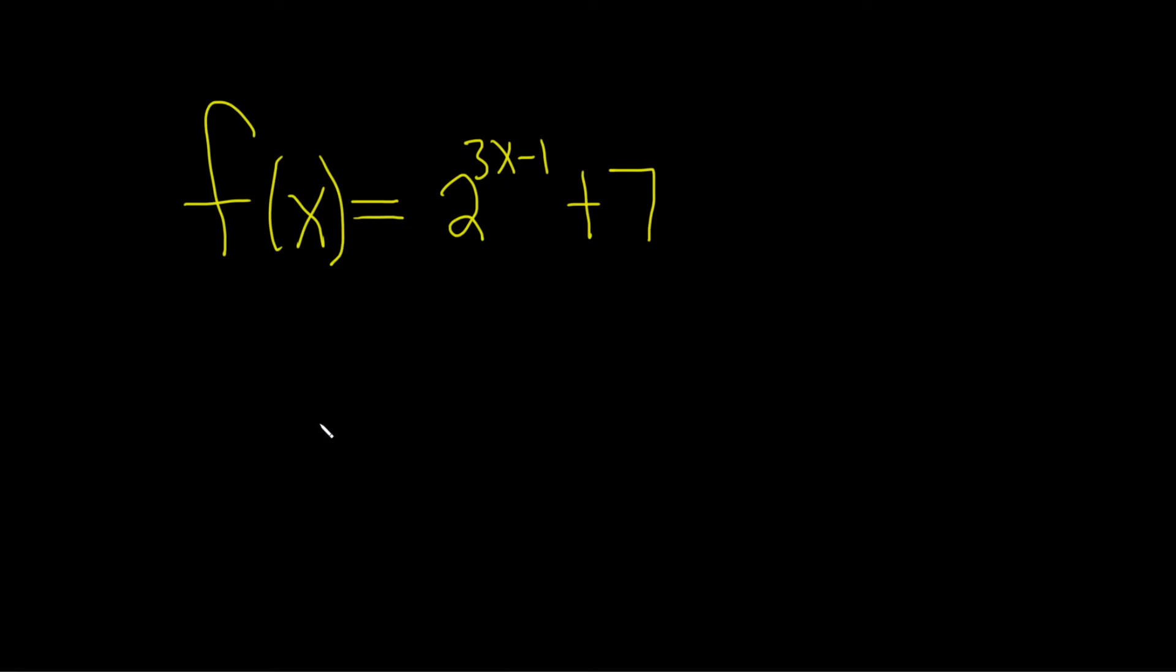In this problem we're going to find the inverse of this exponential function. To do this, the very first step is to replace your function with y. So just rename it. We'll start by letting y equal 2 to the 3x minus 1 plus 7.